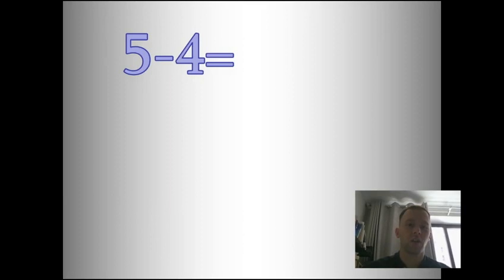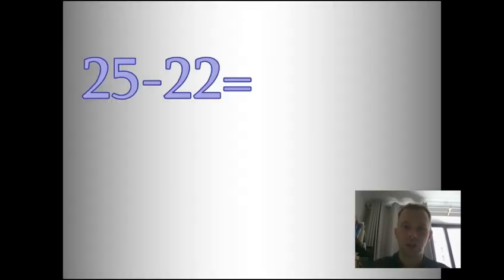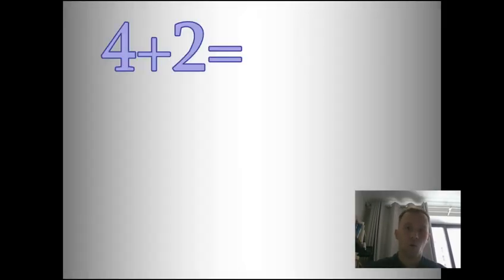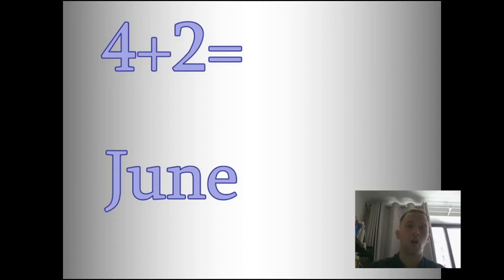Game number three is months math. You're going to give the students a math question. For example, here we have five take away four, but the answer will be the corresponding month of the year. So five take away four is January. Twenty-five take away two — what month is this? It's March. Four plus two is June. You can also get the students to write some questions and then ask their partner or other students in the class.